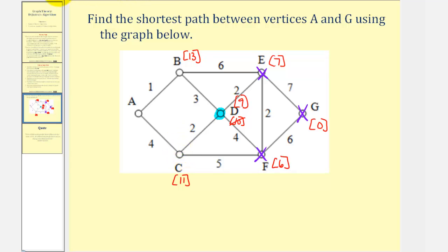Looking at B first, notice how nine plus three would be twelve. Because twelve is less than thirteen, we replace thirteen with twelve. Looking at C, notice that nine plus two is eleven. Since C is already marked with eleven, we can go ahead and leave that as eleven. Mark D as visited.